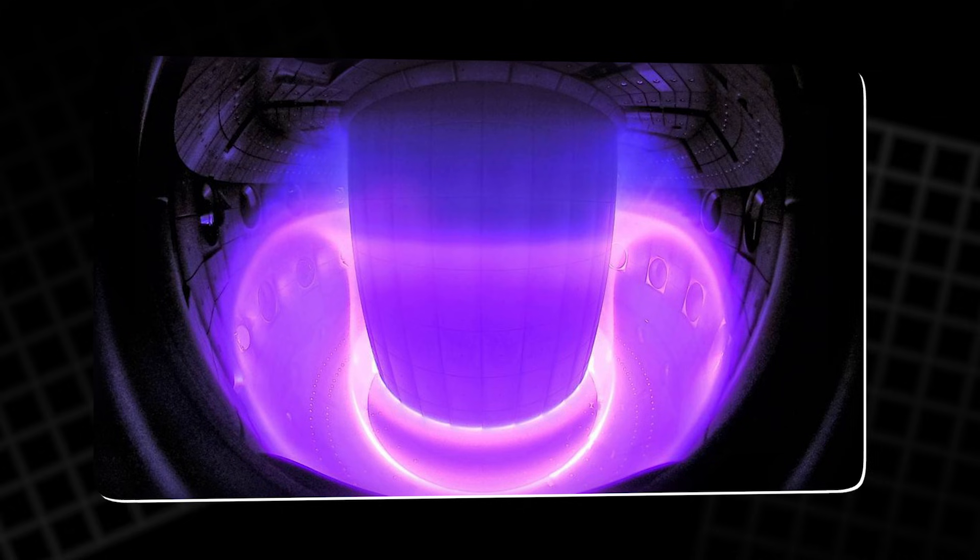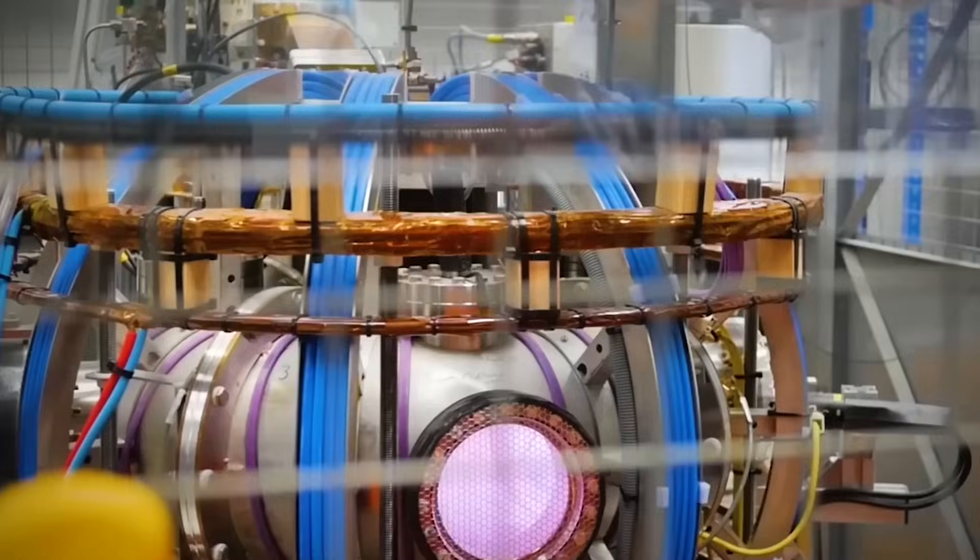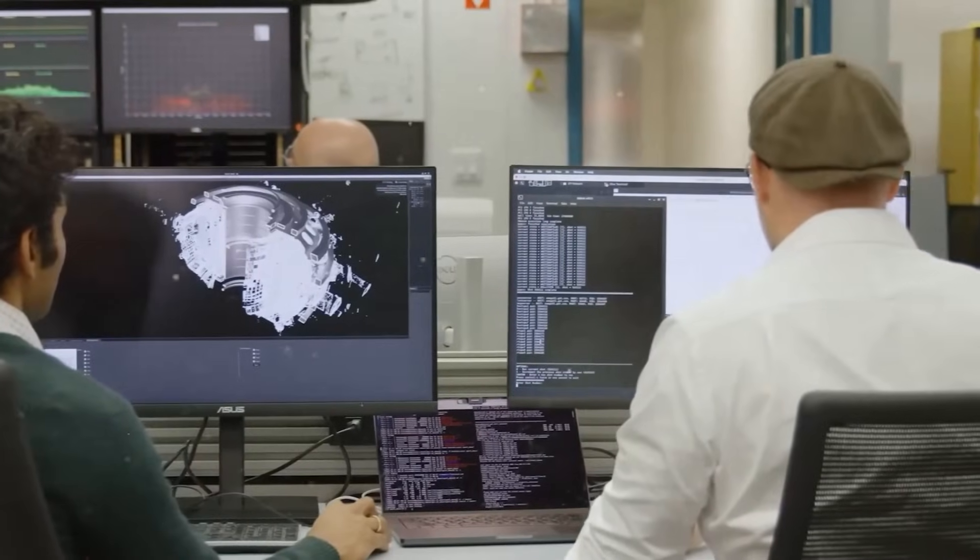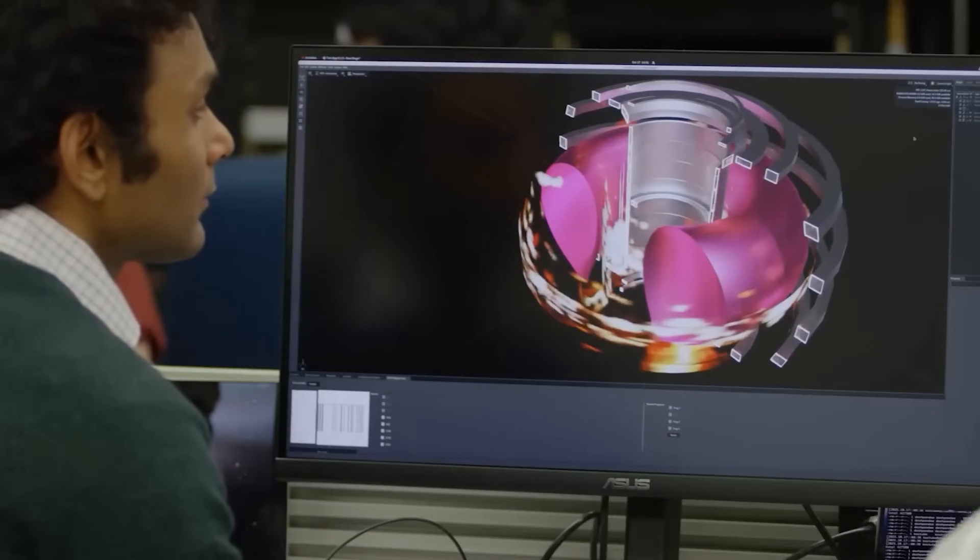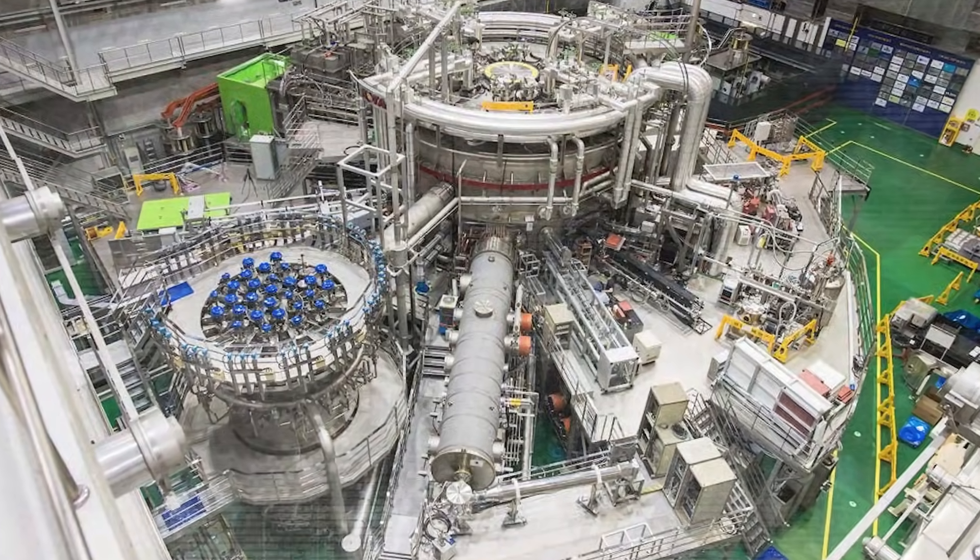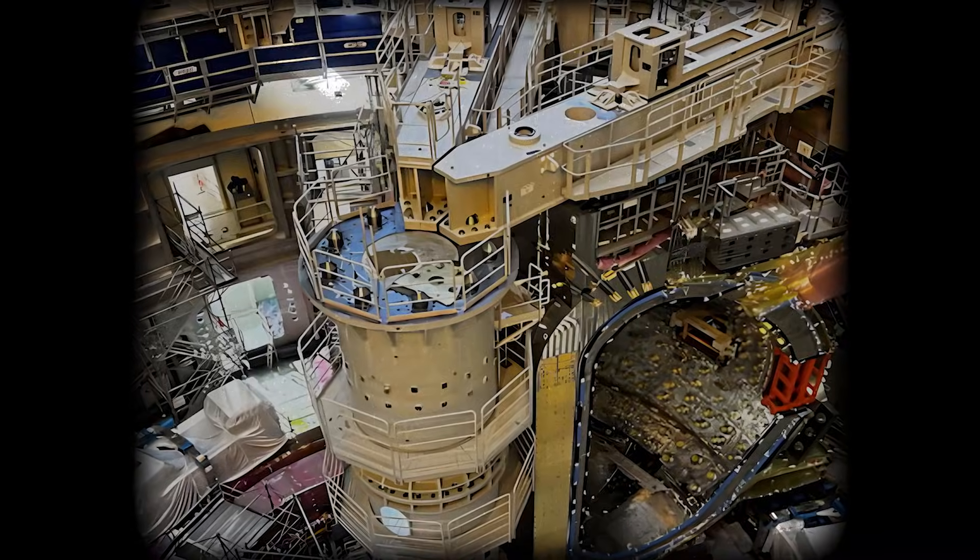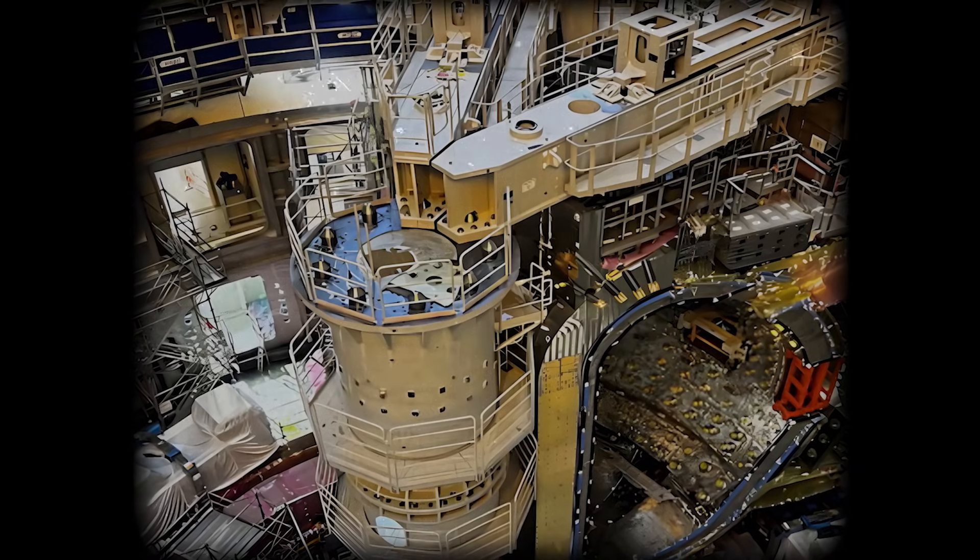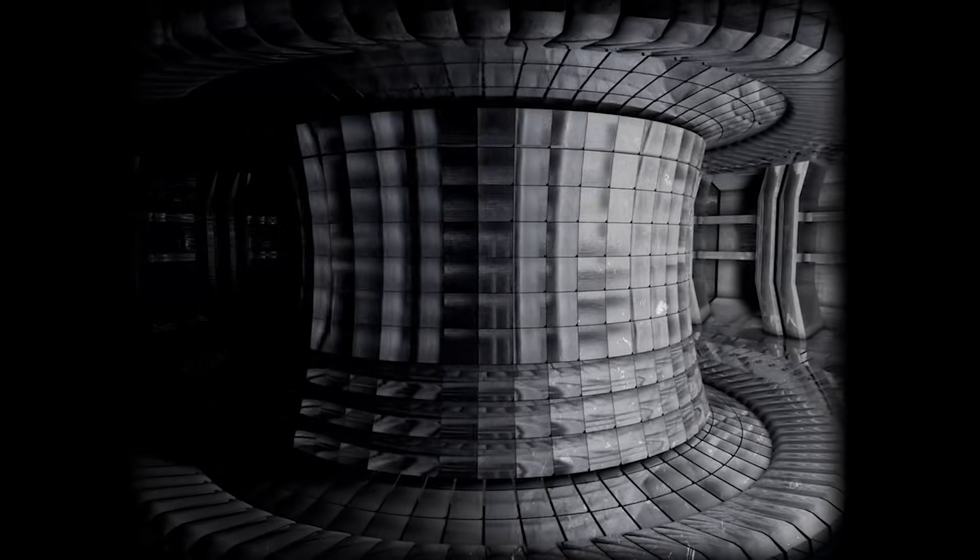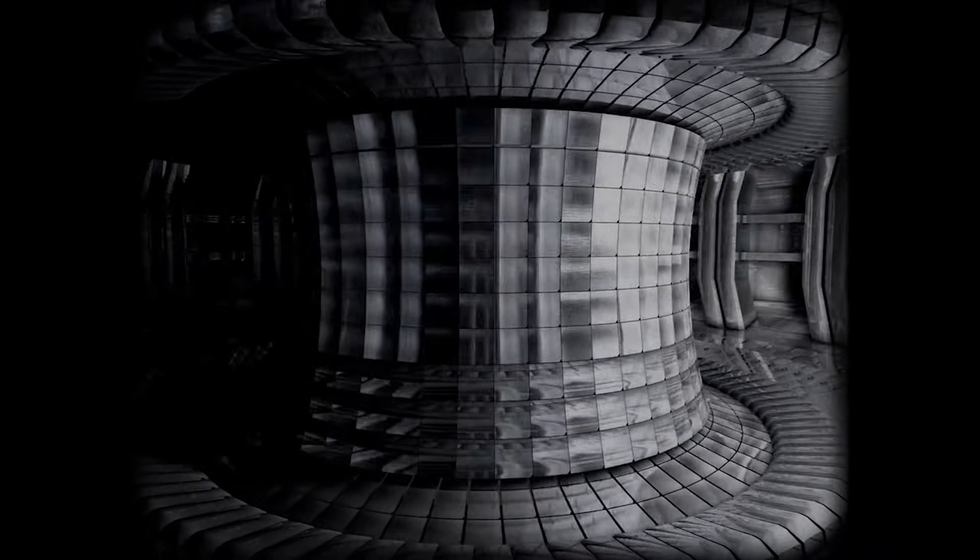This is where 'bigger is easier' came from. The Lawson criterion says you need the right mix of temperature, density, and confinement time. If confinement time is short, you must push temperature and density harder. Big tokamaks give you more volume and more time, so the plasma has a better chance to stay stable. That logic helped justify ITER, the giant international reactor being assembled in southern France. The hope is net energy, where fusion output beats the energy used to sustain the plasma.